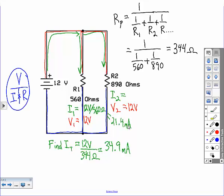Now in branch two, we could take the 34.9 milliamps total and subtract 21.4, or we could do it the same way we did branch one, 12 volts divided by 890 ohms. And we get 13.5 milliamps, which makes sense. The branch with the higher resistance should have less current flowing through that branch. And that's how you solve a parallel circuit problem.